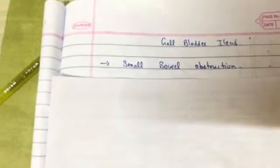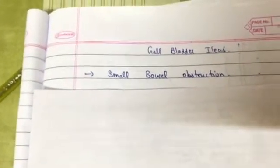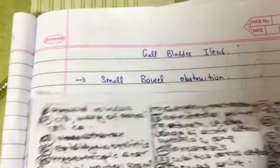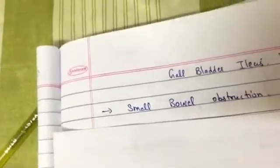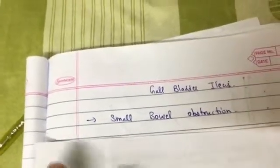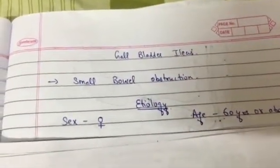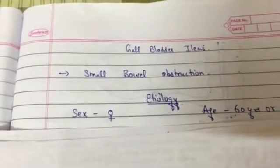Hello guys, today I will be talking about gallbladder ileus. Gallbladder ileus is the obstruction caused by gallstones involving the small bowel. The small bowel, specifically the ileum, is the part mainly affected. This disease — small bowel obstruction — is mainly seen in patients who are 60 years or above and mainly seen in female patients.